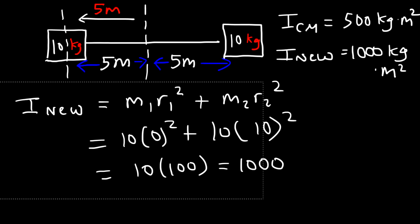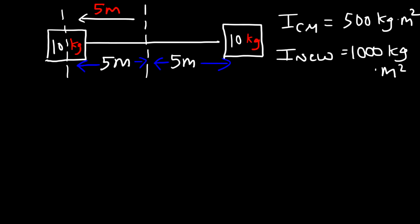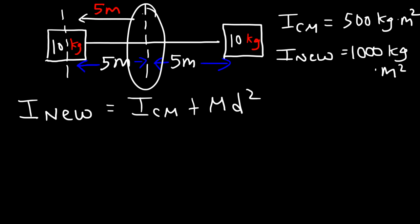There's another way to get this answer using the parallel axis theorem. The parallel axis theorem allows us to calculate the new inertia value if we have the original inertia where the axis of rotation passes through the center of mass. Keep in mind this only works if the new axis is parallel to the original axis, the original axis passes through the center of mass, the system is symmetrical, and the masses are equal — if they're different, it won't work.